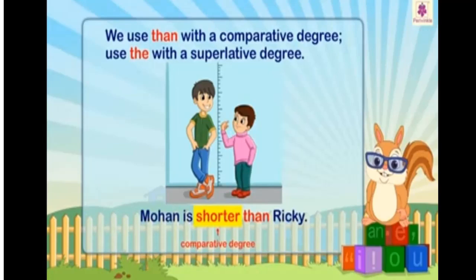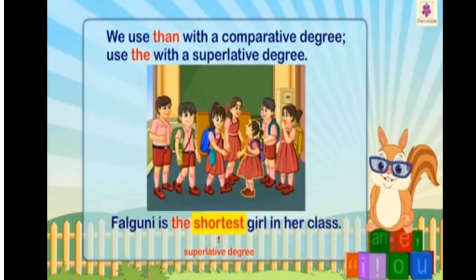For example, Mohan is shorter than Rikki. Another example: Falguni is the shortest girl in her class.